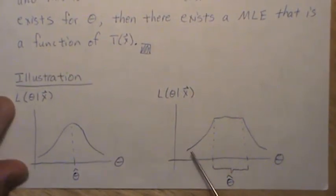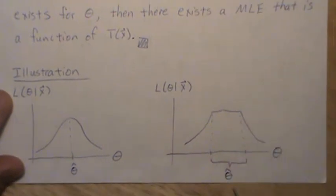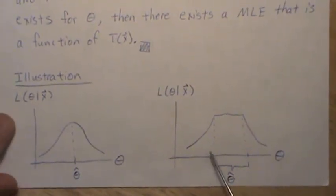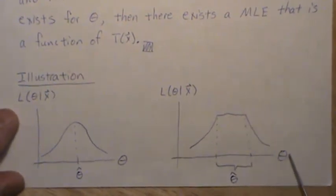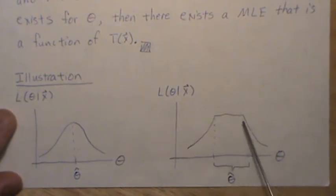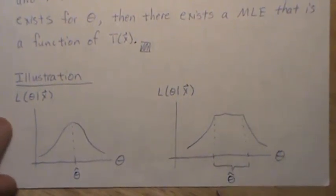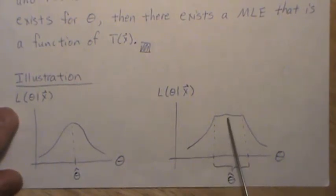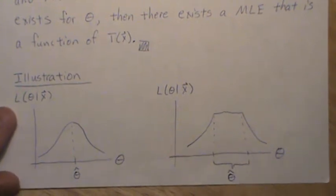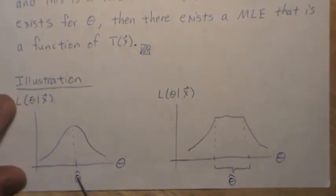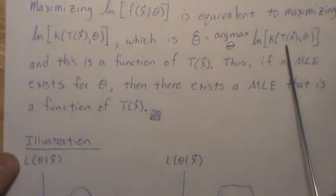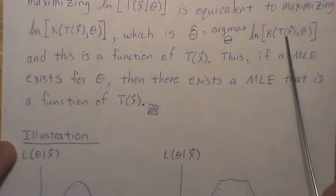If we have a likelihood that goes up, then is flat, then goes down — the theorem says an MLE exists in both situations. In the flat region, it's usually the endpoints that are functions of the sufficient statistic. There are creative people who construct MLEs in the flat region that are not solely functions of the sufficient statistic, but let's call our sufficient statistic T1.